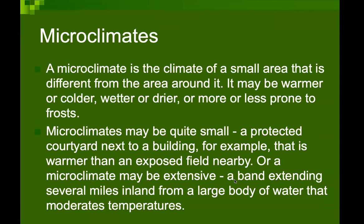Microclimate is the climate of a small area that is different from the area around it. It may be warmer or cooler, wetter or drier, or more or less prone to frost. Microclimates may be quite small — a protected courtyard next to a building, for example, that is warmer than an exposed field nearby — or a microclimate may be extensive, a band extending several miles inland from a large body of water.